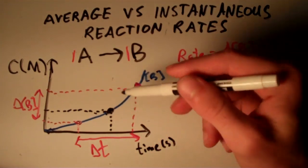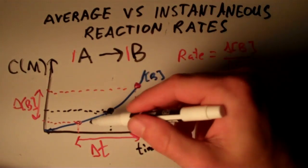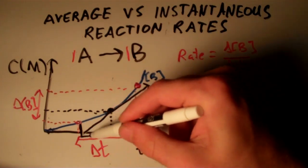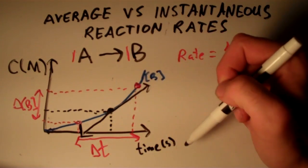I want to find, basically in other words, the slope of the line that is tangent to this concentration versus time curve.